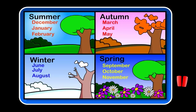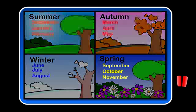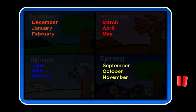Each month belongs to a season. There are 12 months in the year and four seasons.